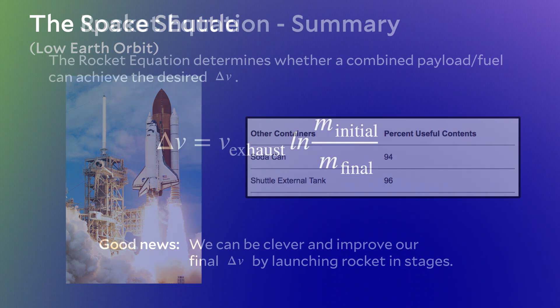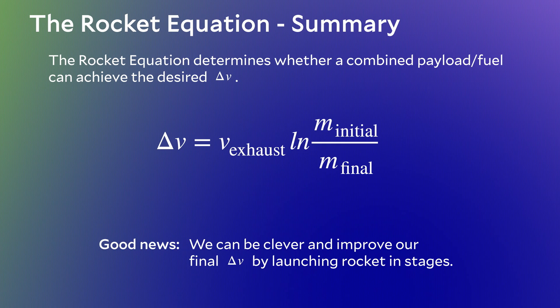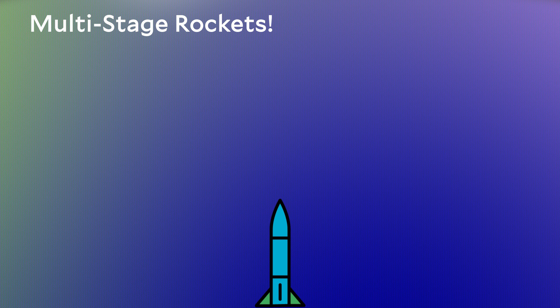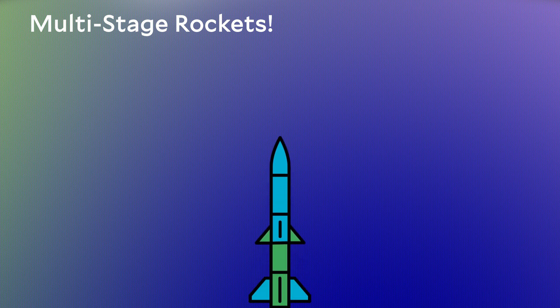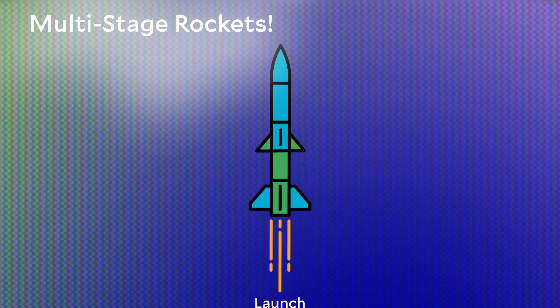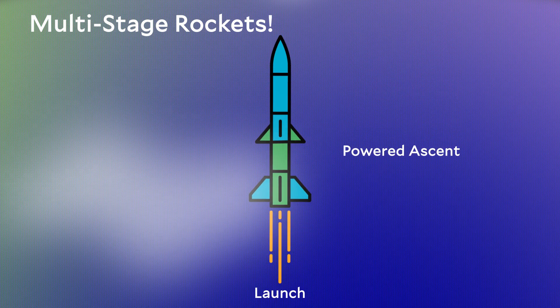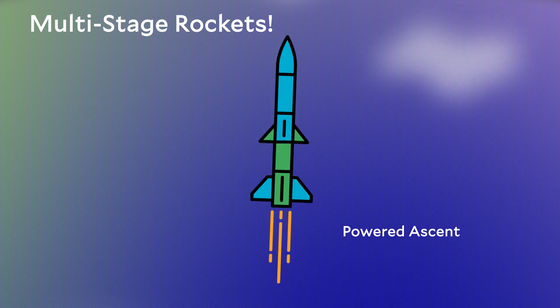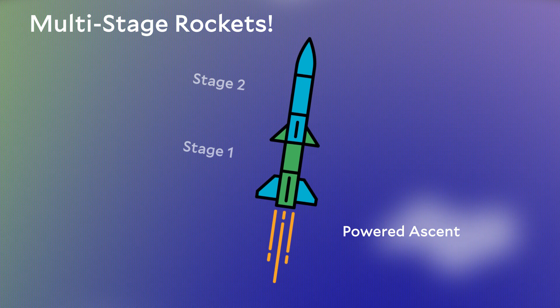So going back to the rocket equation, we just don't have much flexibility in any of these terms. The good news though is that we can be clever and improve our delta V by using rocket stages. One way to improve that final payload mass is to use a multi-stage rocket. The idea is that you split your fuel and propellants into two or more tanks. As you launch, you use up all the propellants in the first tank and then jettison it — that empty tank — to reduce weight, and continue burning propellants in the second tank. Each of these separate tanks are called stages.